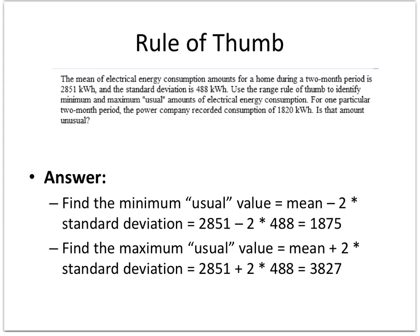So to find the minimum or a usual value, take the mean that they've given you up here, 2851, minus two times the standard deviation. In other words that puts us within two standard deviations, which would be a usual value of the mean, and this gives us a minimum.